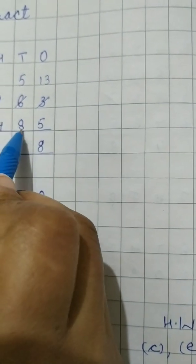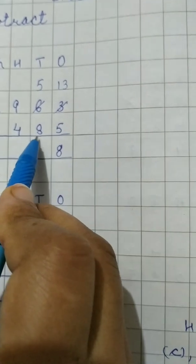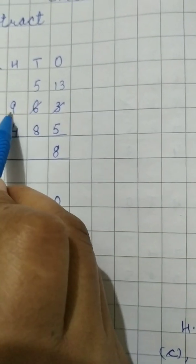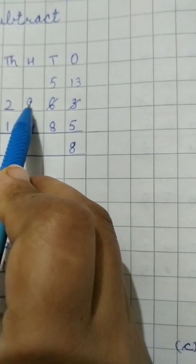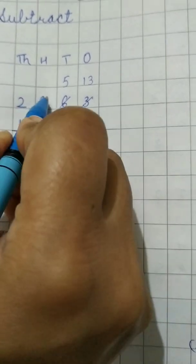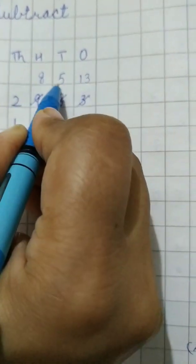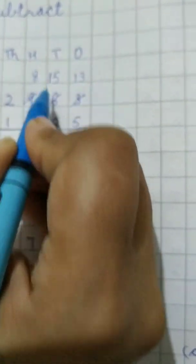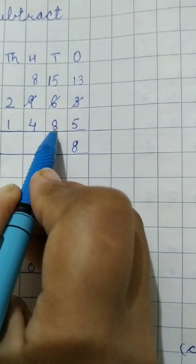Now 5 minus 8. Again the upper number is smaller than the lower one. So it will borrow from this 9. Now 9 will give 1 to this 5. It will become 8 and this 5 will become 15. Now we have to go from this number to this one.